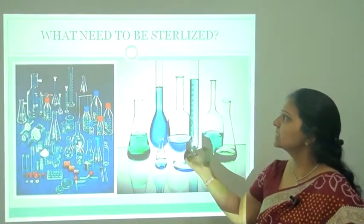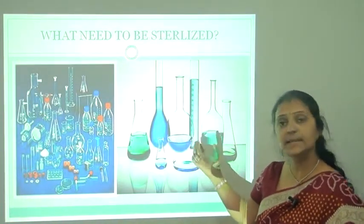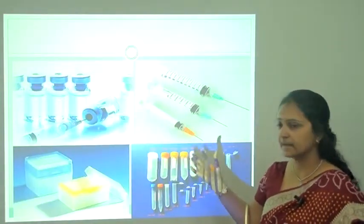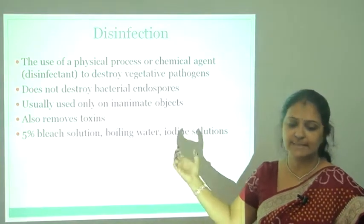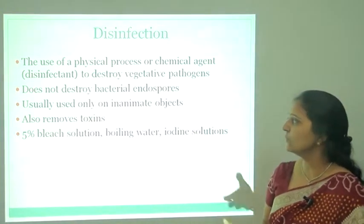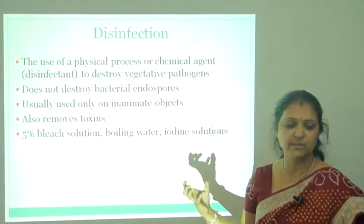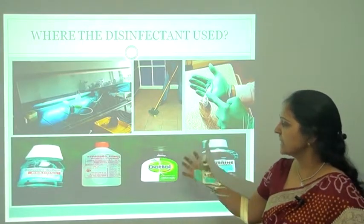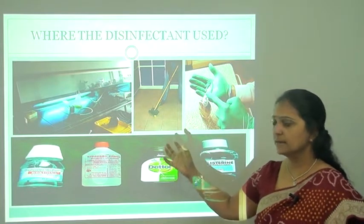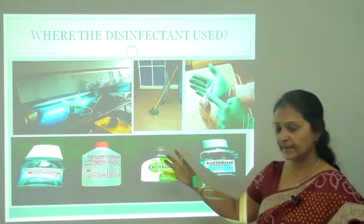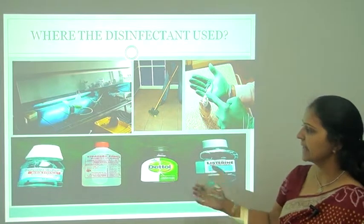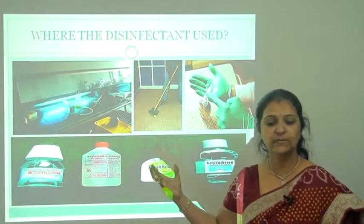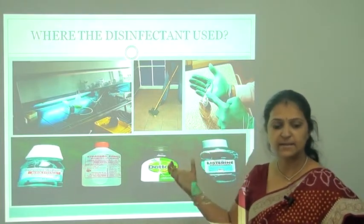Some objects used in the laboratory and hospitals need to be sterilized. Disinfection uses chemicals for the removal of microorganisms. Surfaces and other things can be disinfected using chemicals such as Dettol, Lysol, and Phenol. These are disinfectants used for the removal of microorganisms from hands and surfaces. Antisepsis is applied directly on exposed body surfaces to destroy or inhibit vegetative pathogens.